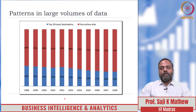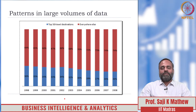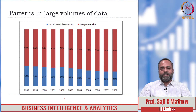The blue bars represent travel volumes to the top 50 travel destinations, and the red bars show travel volumes to everywhere else. This graph shows that travel volumes, or travel preferences of people, have been changing over the 11 years depicted in the graph. Somebody collected this data and visualized it as bar graphs. What are your quick observations from this bar graph?